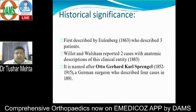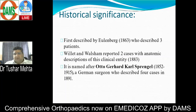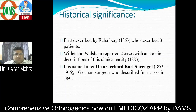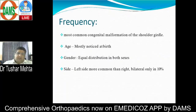Regarding the history: Uhlenberg was the first person to describe this condition, then Willett and Walsham described a couple of cases, but finally it was Otto Gerhard Karl Sprengel who described these cases, and therefore the term Sprengel's deformity came into existence.